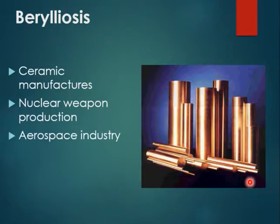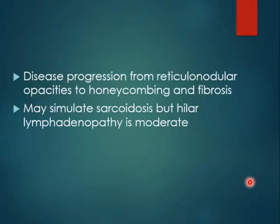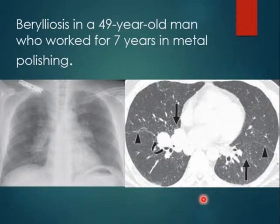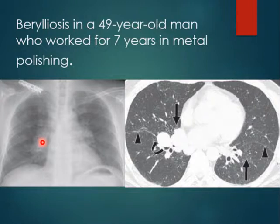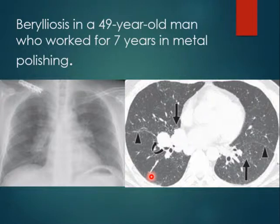Beryliosis is another type of pneumoconiosis seen in people who work with ceramics, nuclear weapon production, and aerospace industry. It progresses from reticulonodular opacities to honeycombing and fibrosis, and may simulate sarcoidosis, but the hilar lymphadenopathy is less obvious. For example, in a 49-year-old man who worked for 7 years in metal polishing and ceramics, you can see bilateral hilar lymphadenopathy suggesting sarcoidosis, with centrilobular nodules and some septal thickening. History is very important.